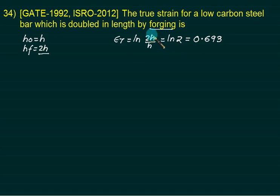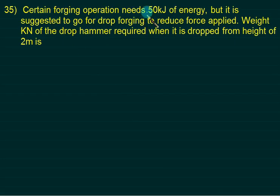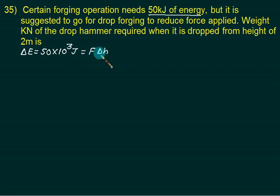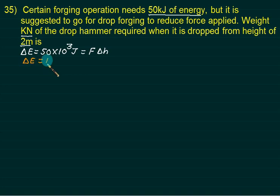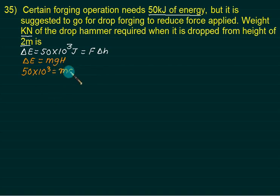Example 4: A forging operation requires 50 kilojoules of energy (ΔE = 50,000 J). It is suggested to use drop forging. To find the weight of the drop hammer when dropped from a height of 2 meters: ΔE = M × G × H, so 50,000 = Mg × 2. The weight Mg comes out to 25 kilonewtons.